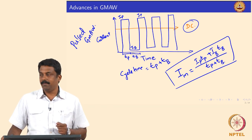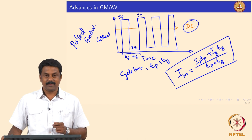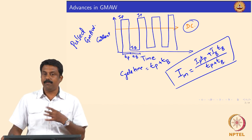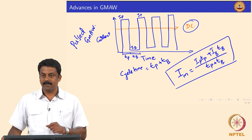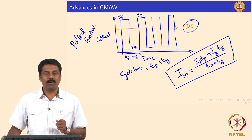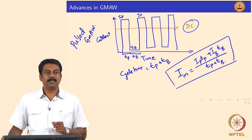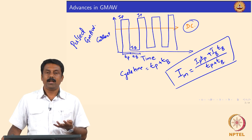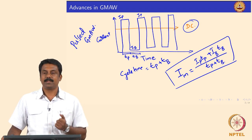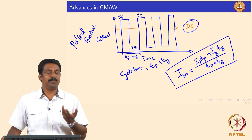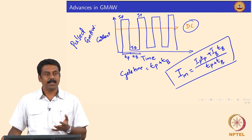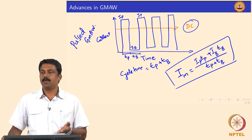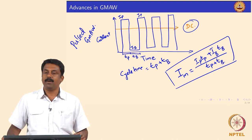For example, if you apply 50 Hz of pulses, the number of pulses is 50 per second, so you get 50 droplets per second. You can increase the pulsing frequency subsequently, depending on the power source characteristics. Using modern rectifier inverter-based power sources with microprocessor control, we can achieve such waveforms very easily.